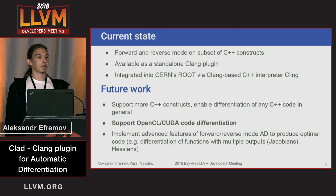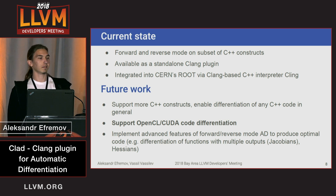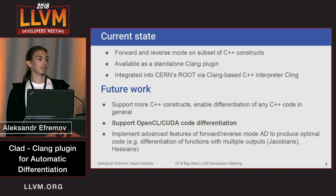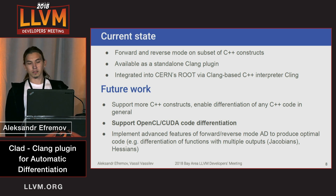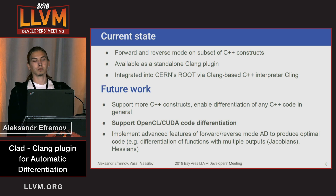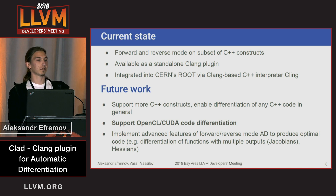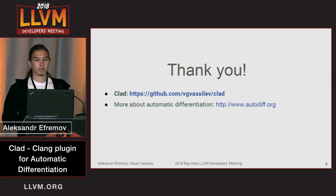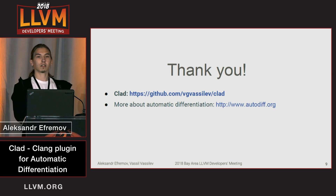The current state is that we support forward and reverse mode, but only for a subset of C++ constructs. It is available as a standalone plugin for Clang, and we have also integrated it into the ROOT data analysis framework based on the Cling C++ interpreter. In future we are going to support C++ in general and want to derive code for GPU targets like OpenCL and CUDA, and implement some advanced features of automatic differentiation. The code is on GitHub where you can find it. Thank you for your attention.